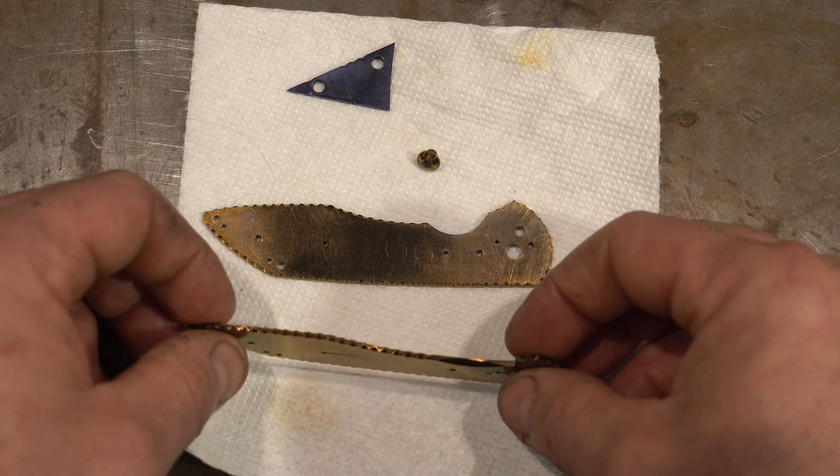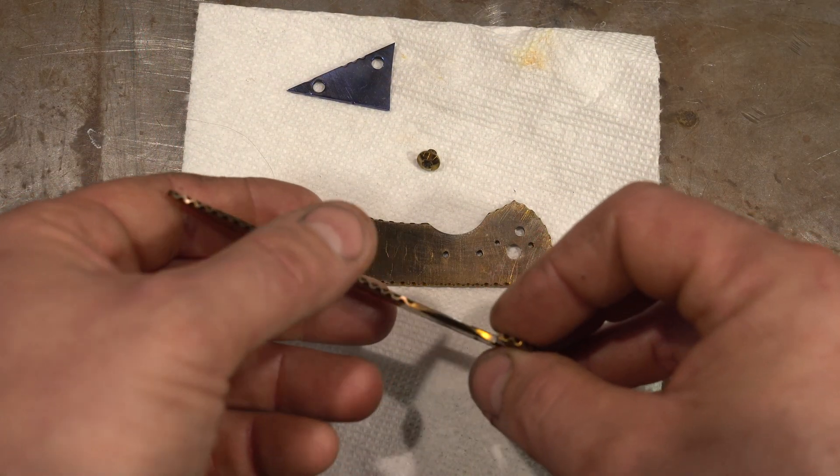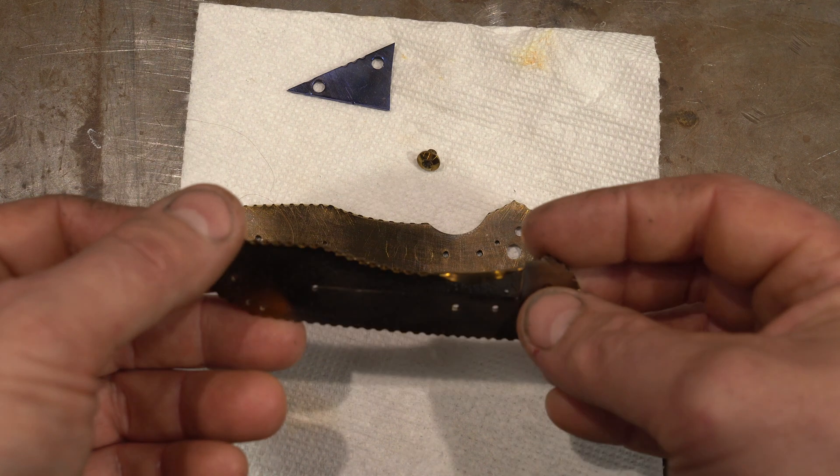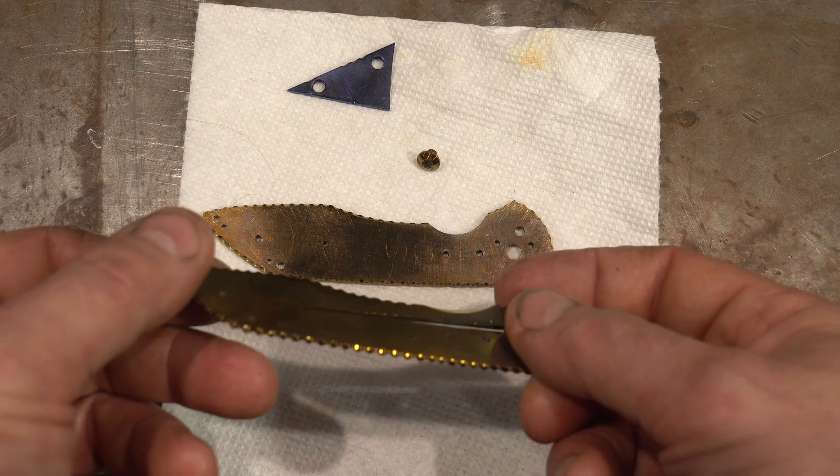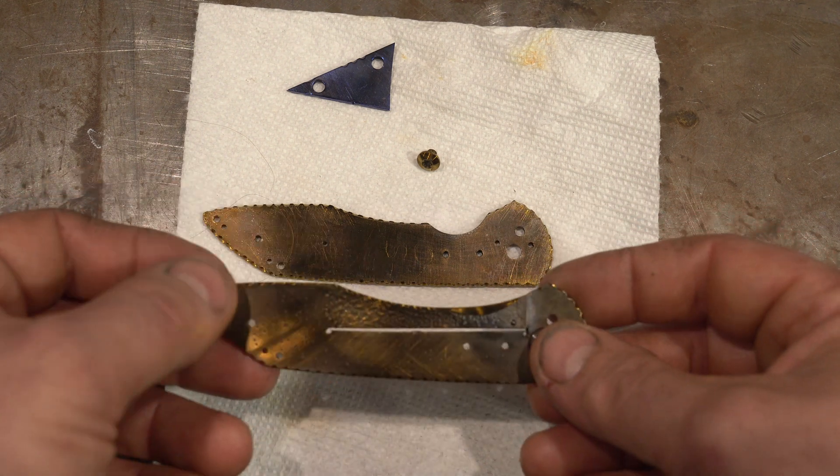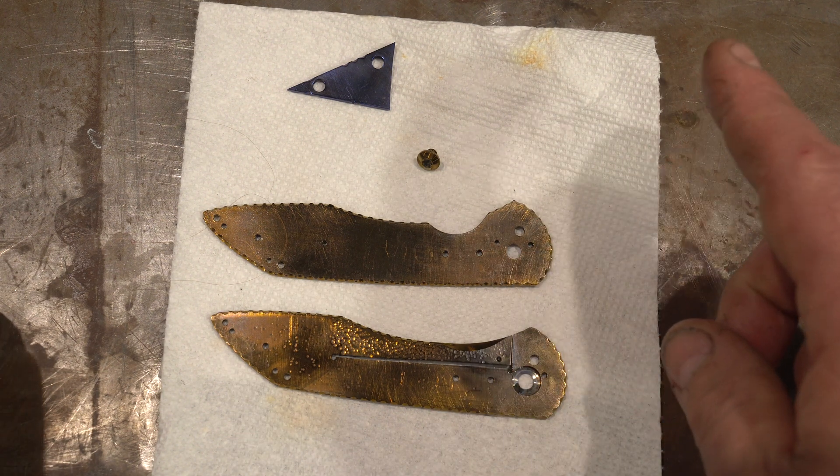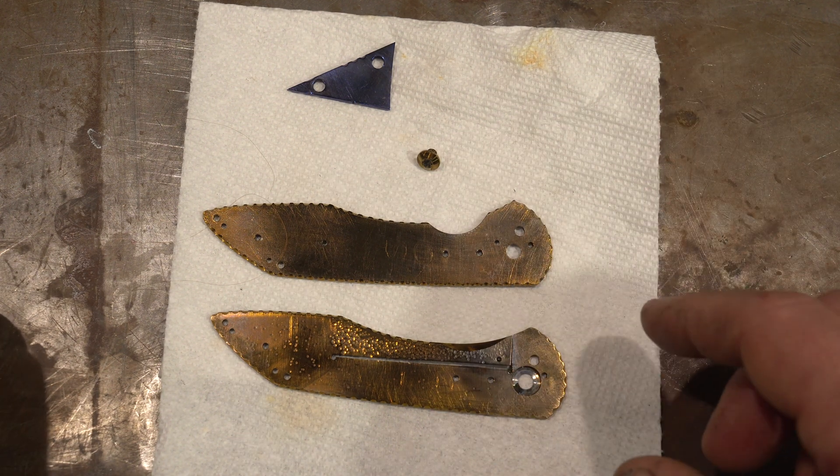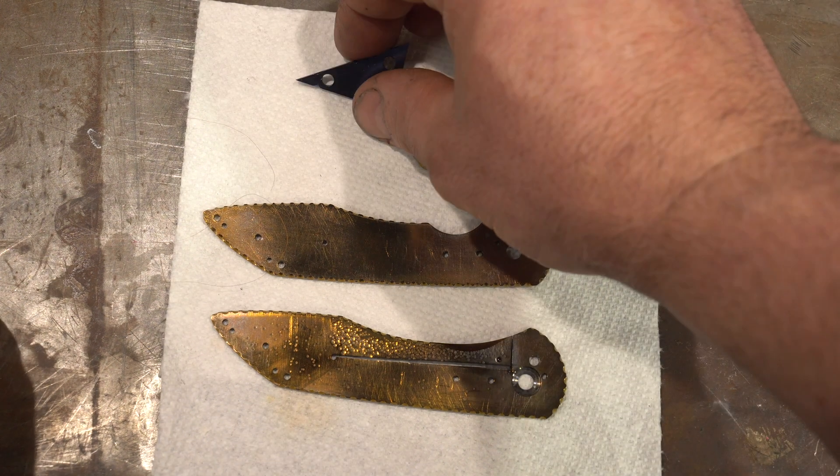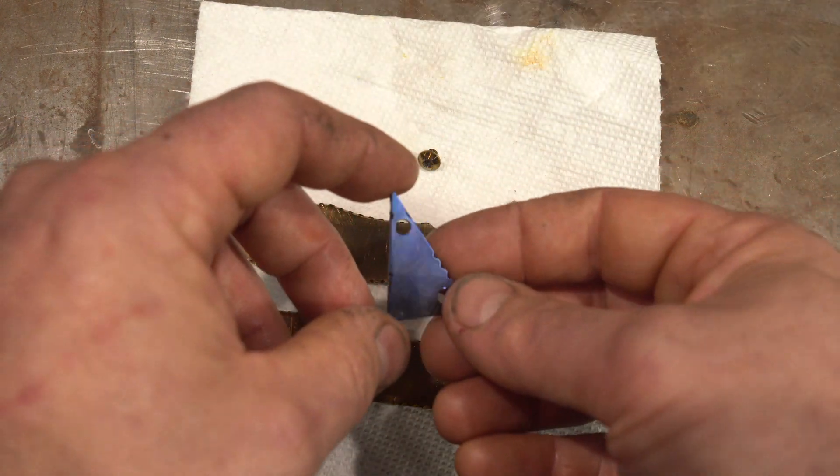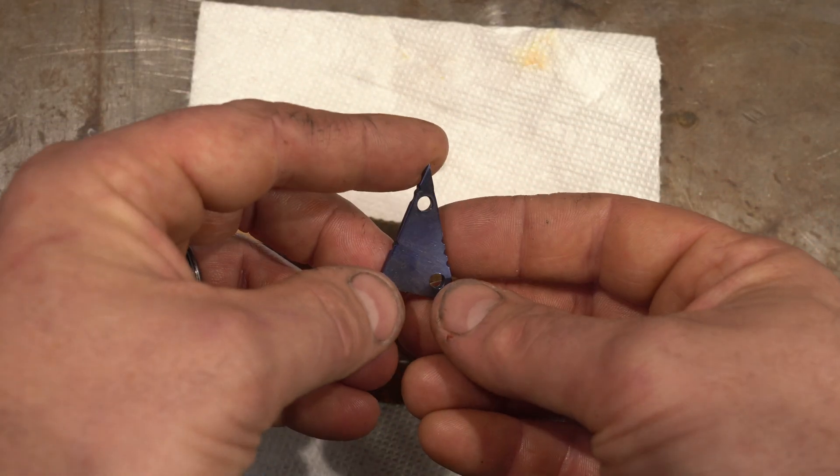So I think these are going to work for the application I need for this folding knife. You guys will see a short of that knife maybe next week. But remember that you can vary the color of the anodization using voltage. I did this one at about 25 volts and you can see it's kind of a purpley color.